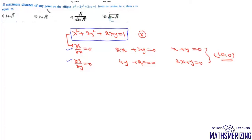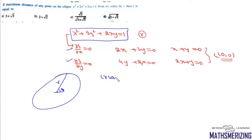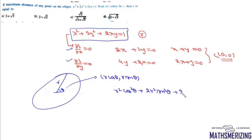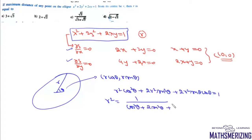Now we need to find the maximum distance of any point on this ellipse from its center. We'll use polar coordinates: let the distance be r and its angle be θ, so x = r cosθ and y = r sinθ. Substituting, we get r² cos²θ + 2r² sin²θ + 2r² sinθ cosθ = 1.